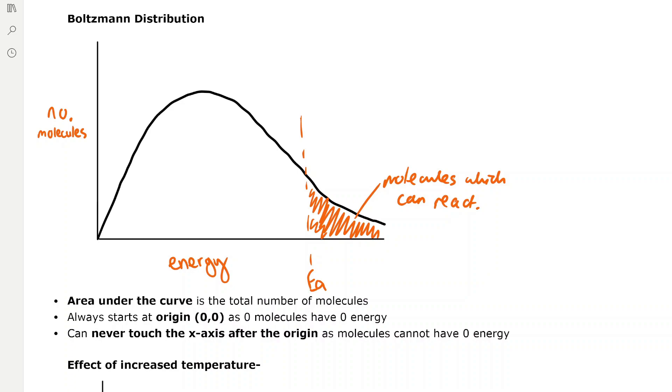The Boltzmann distribution always starts at the origin, 0, 0, because 0 molecules have 0 energy, and then it can never touch the x-axis after the origin, because the molecules cannot have 0 energy.